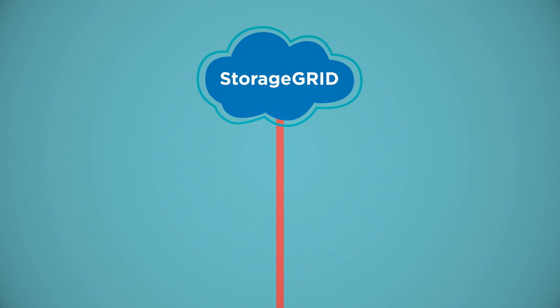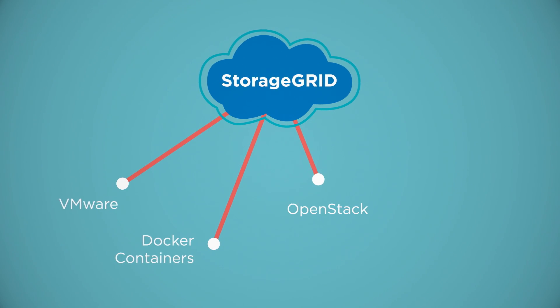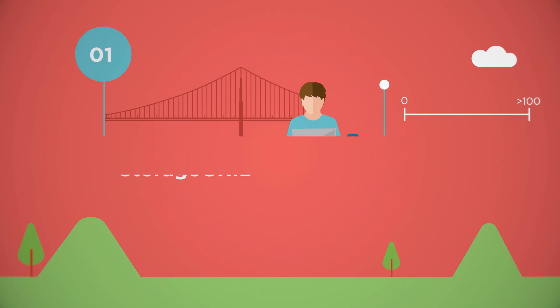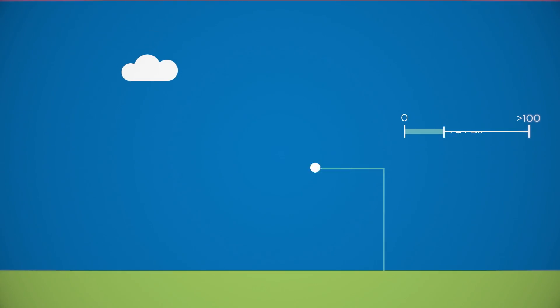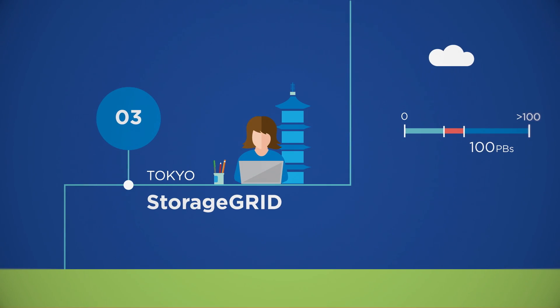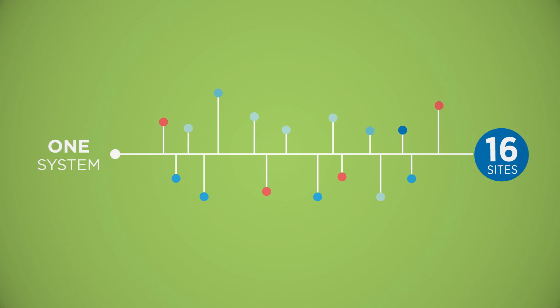With Storage Grid, you have numerous deployment options via Docker containers, VMware, OpenStack, or NetApp-engineered appliances. The scale-out node architecture lets you increase capacity on-demand at varying levels across your sites, and supports up to hundreds of petabytes and 16 sites as one cohesive system.